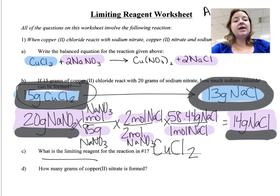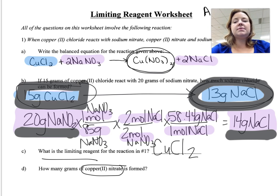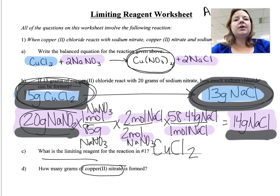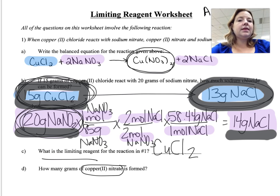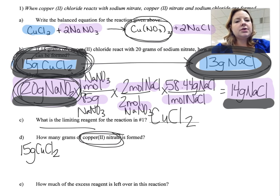The next thing it asks us is how much copper nitrate is formed — that's problem D. Since copper chloride limits us, it doesn't matter how much sodium nitrate I have; I'll have extra of that. So I'm going to start with the limiting material — 15 grams of copper chloride — and get to copper nitrate. Pause the video, try that stoichiometry calculation on your own, then come back and check.